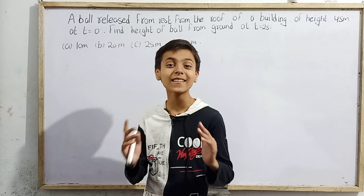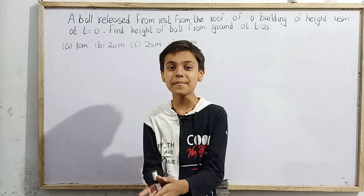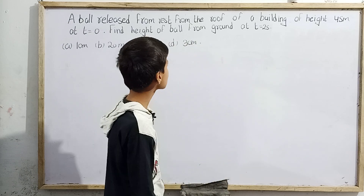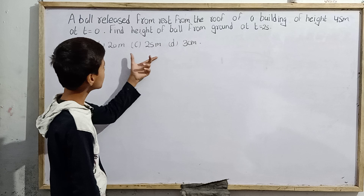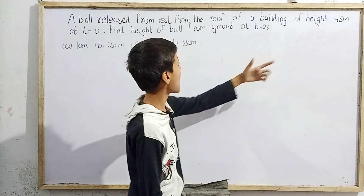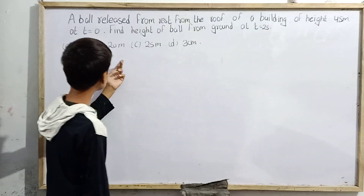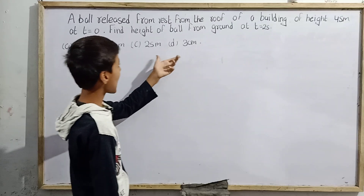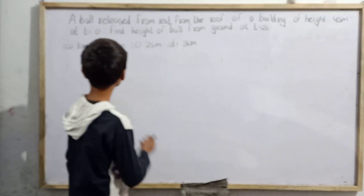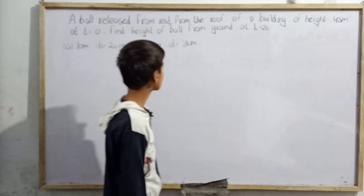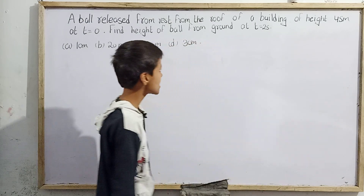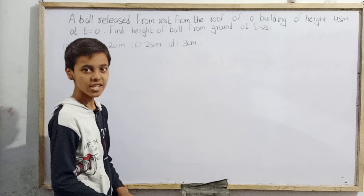This is Sarim Khan back with a new question on kinematics for JEE. Today's question asks that a ball is released from rest from the roof of a building of height 45 meters at t equals to zero. Find the height of the ball from the ground at t equals to two seconds. Options are: 10 meters, 20 meters, 25 meters, and 30 meters.